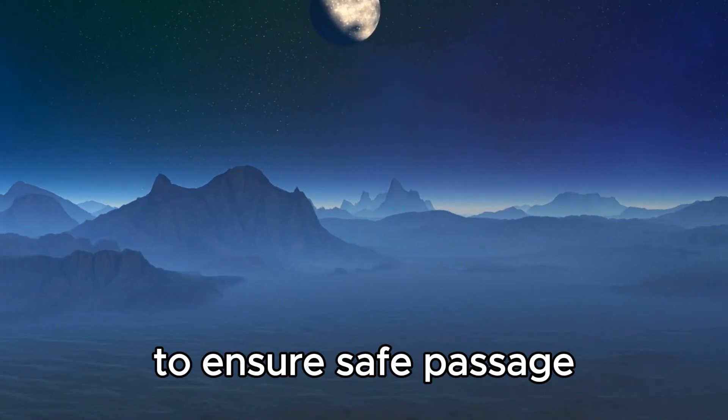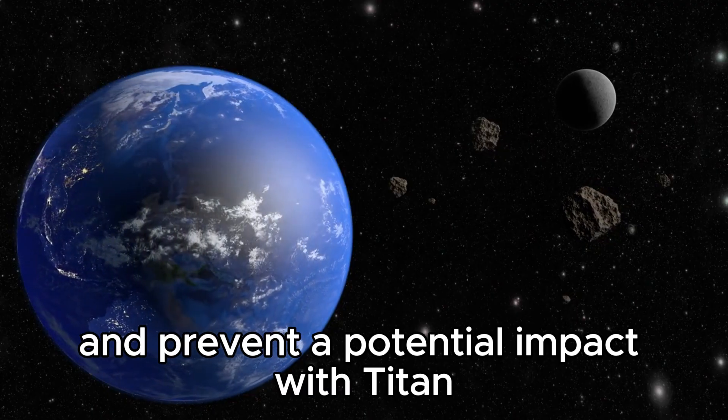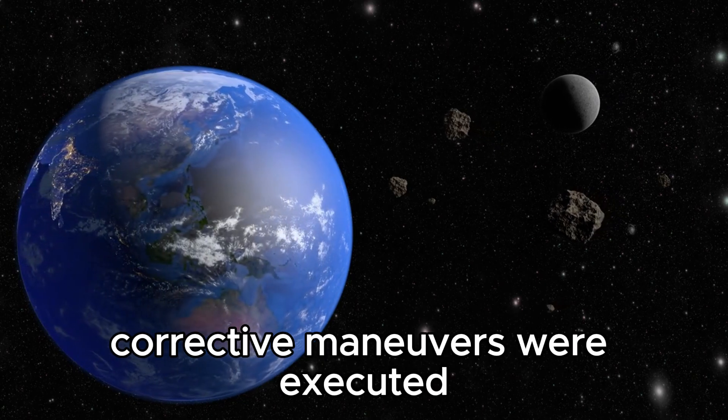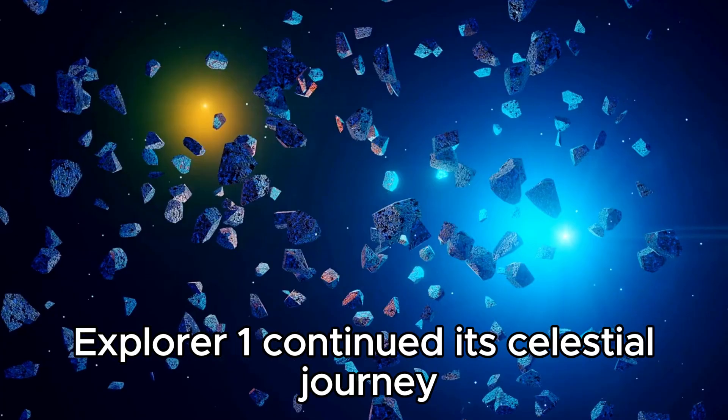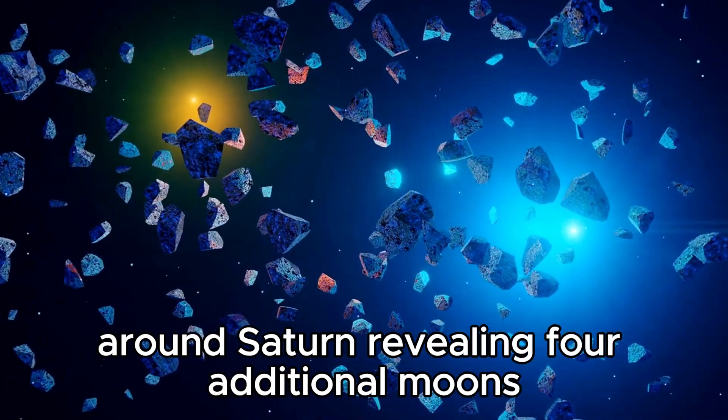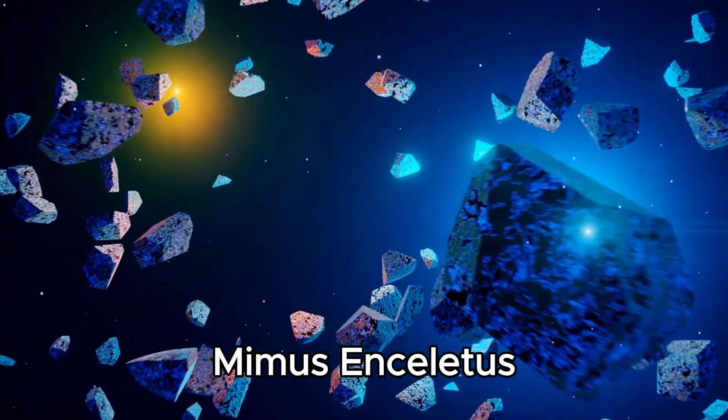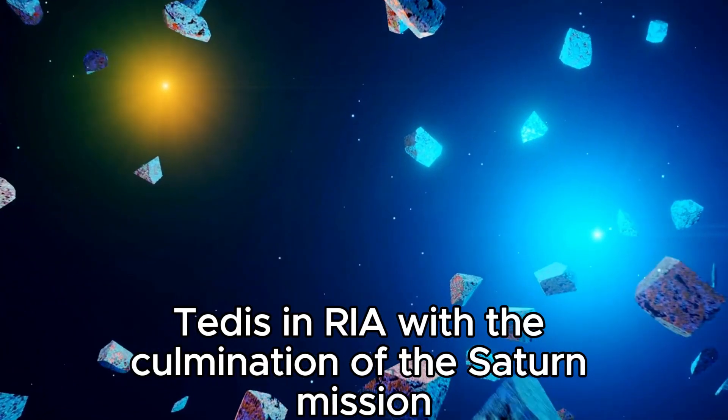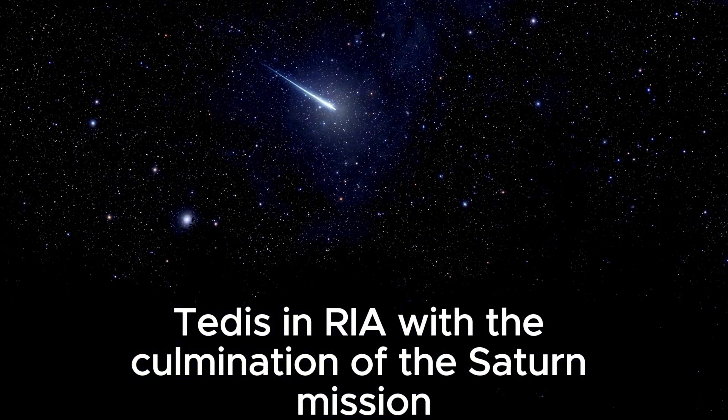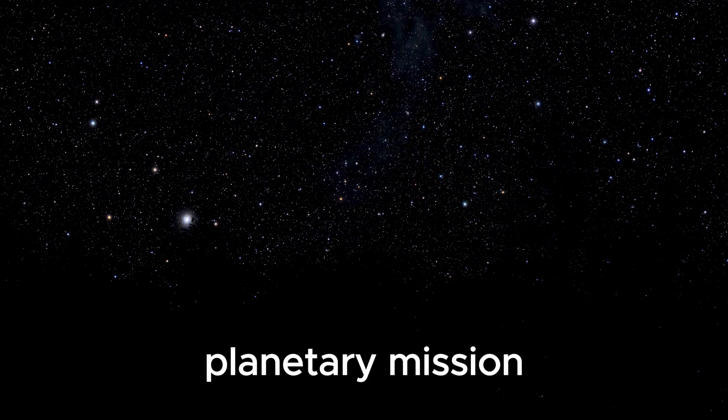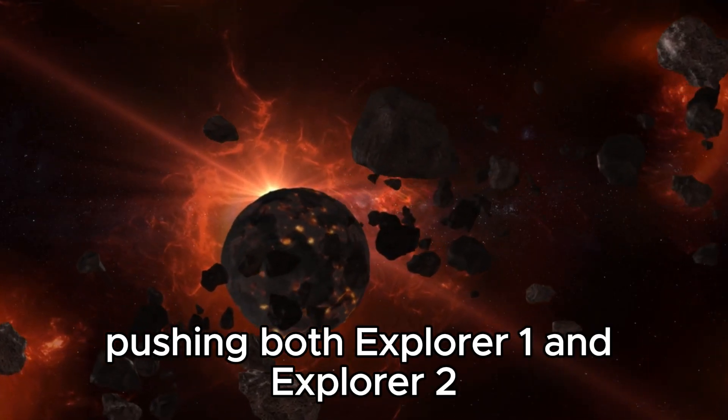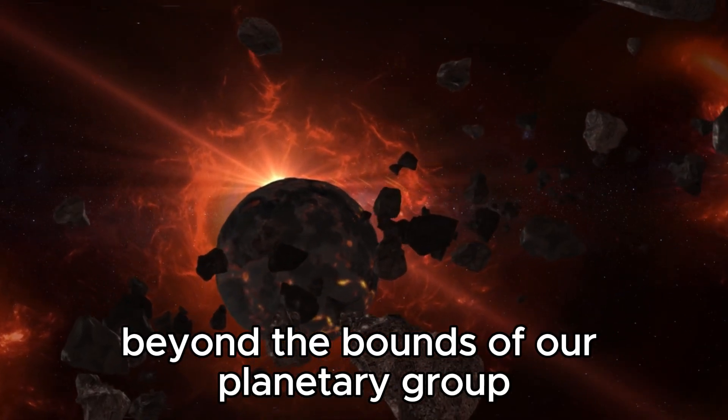To ensure safe passage and prevent a potential impact with Titan, one of Saturn's moons, corrective maneuvers were executed. Explorer 1 continued its celestial journey around Saturn, revealing four additional moons: Mimas, Enceladus, Tethys, and Rhea. With the culmination of the Saturn mission, researchers decided to conclude the Explorer planetary mission, pushing both explorers beyond the bounds of our planetary group.